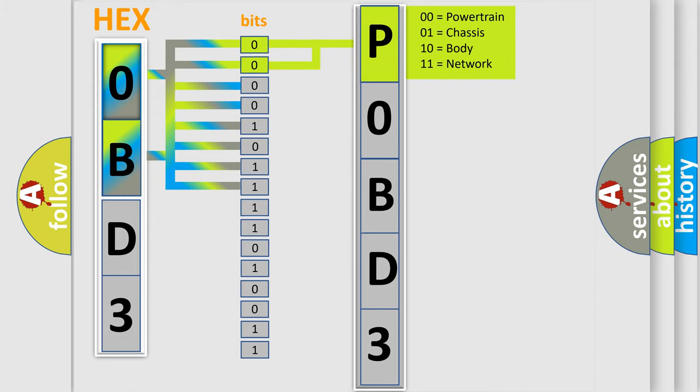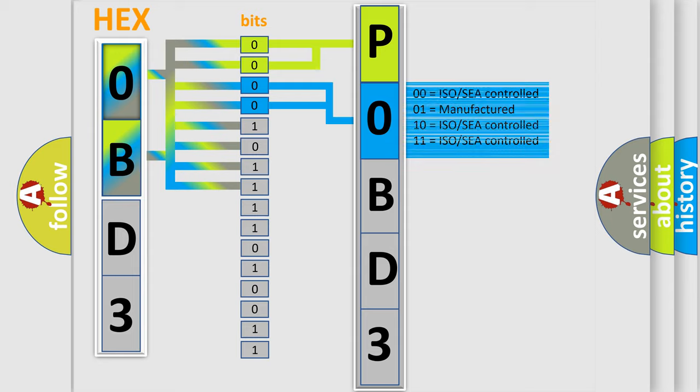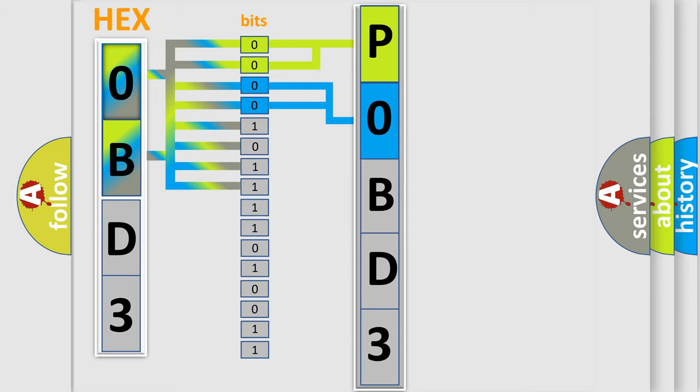By combining the first two bits, the basic character of the error code is expressed. The next two bits determine the second character. The last bit styles of the first byte define the third character of the code.